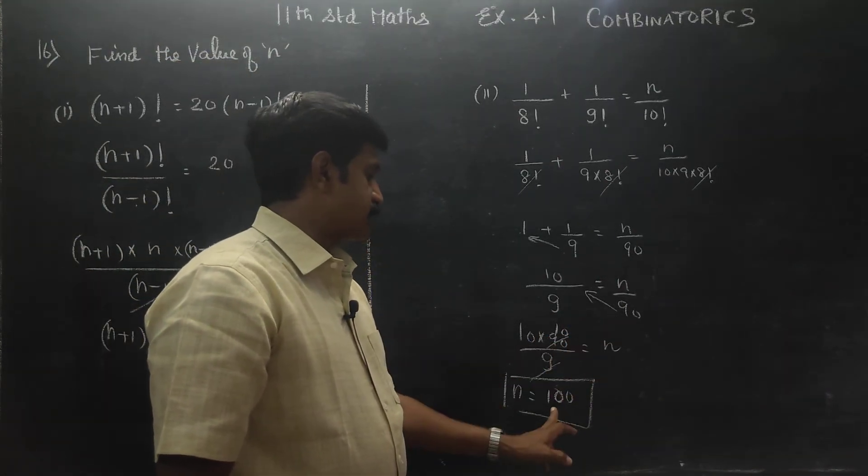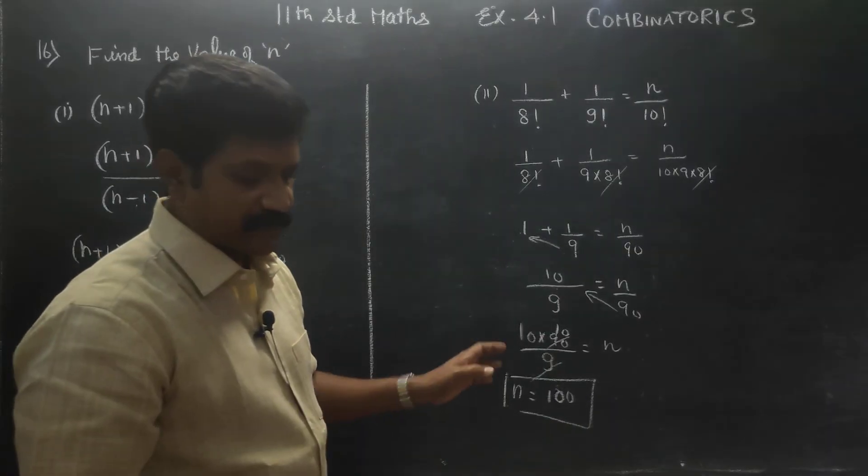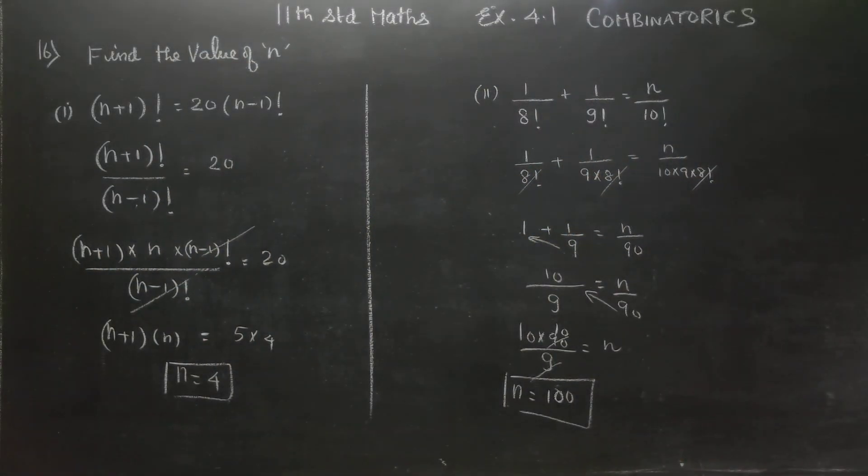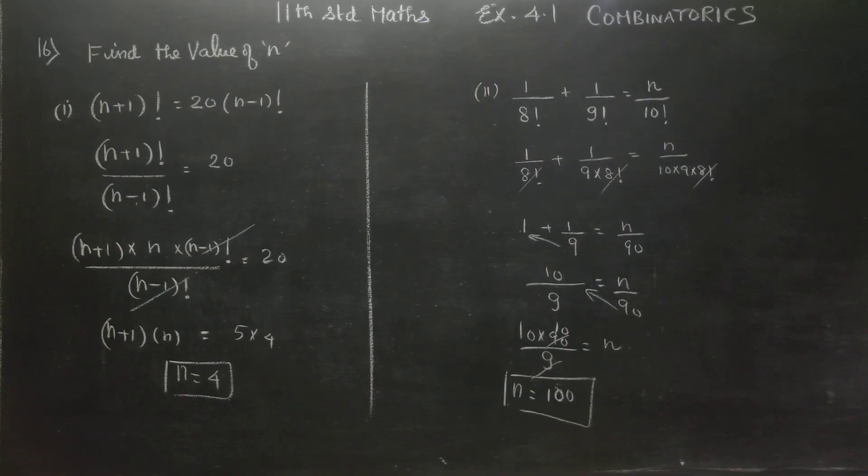10 times cancel. 10 times are 100. N is equal to 100. This is a simplified form of doing this sum. Smallest factorial distub pannathinga, biggest factorial distub pannathinga, you will get an exact answer. Okay. Thank you.